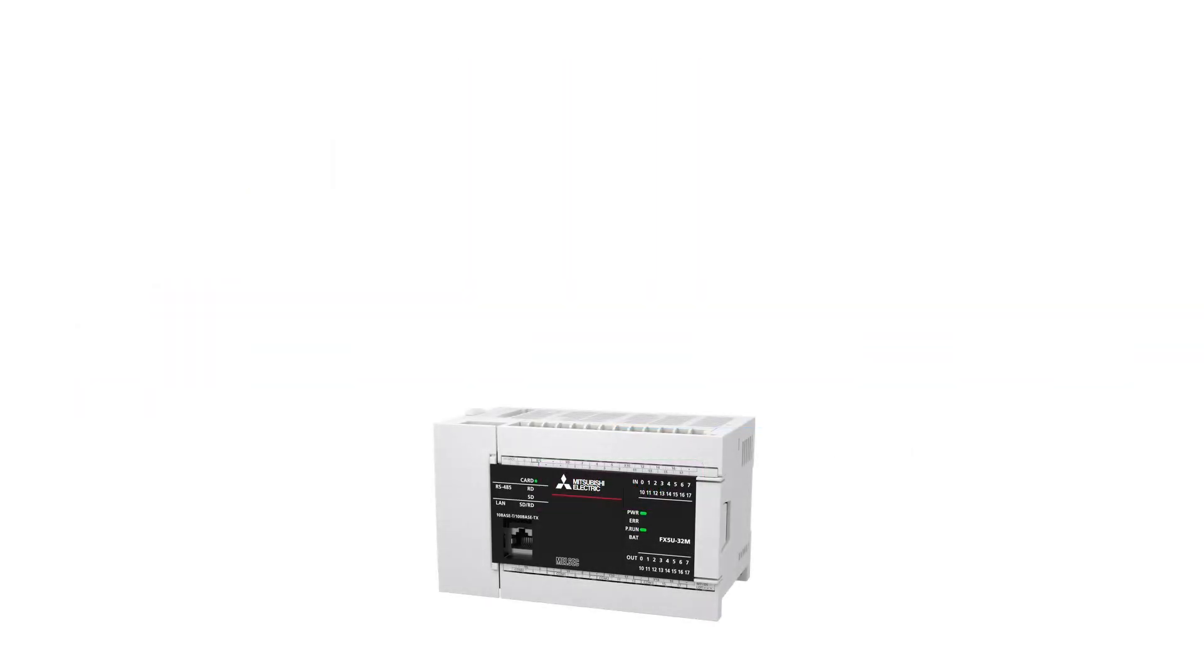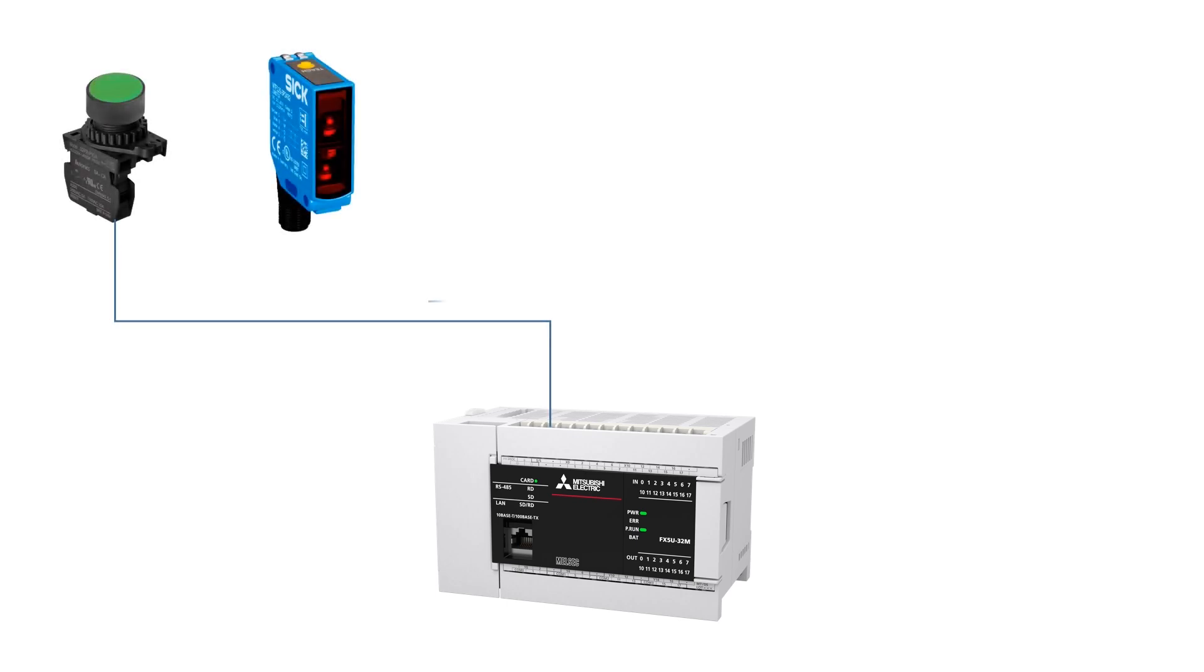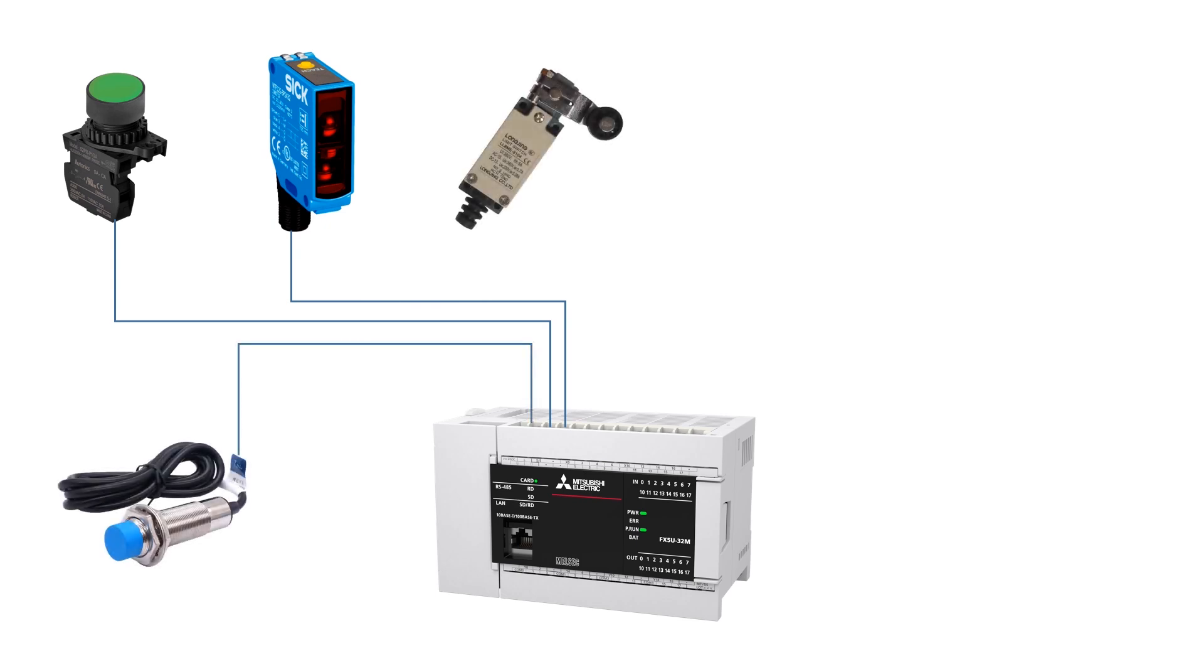PLC digital input signals represent two states, on and off. These signals are received from digital field devices such as push buttons, photoelectric sensors, proximity sensors, and limit switches. Simply put, a digital field input device acts as a normally open or closed contact, like a switch with on and off states.